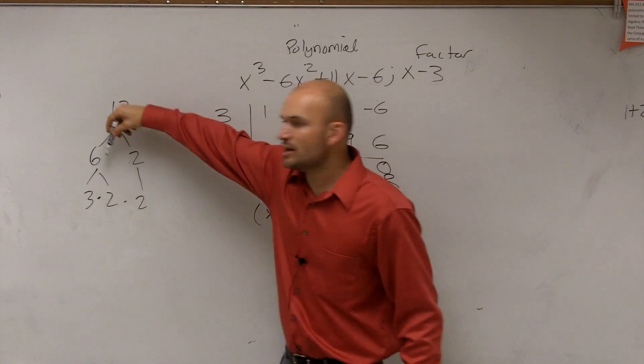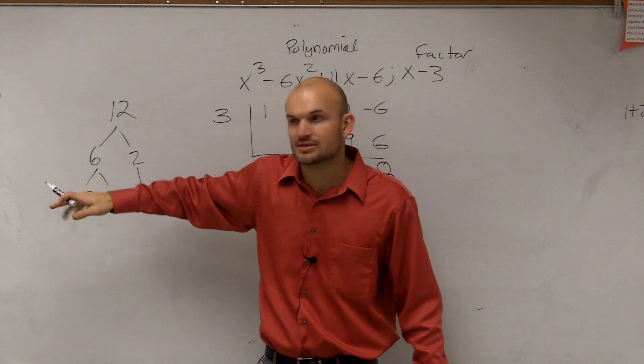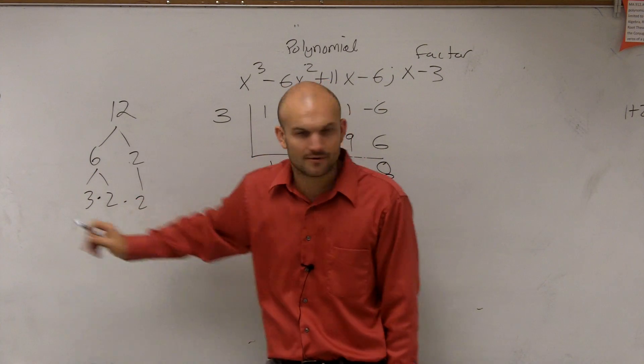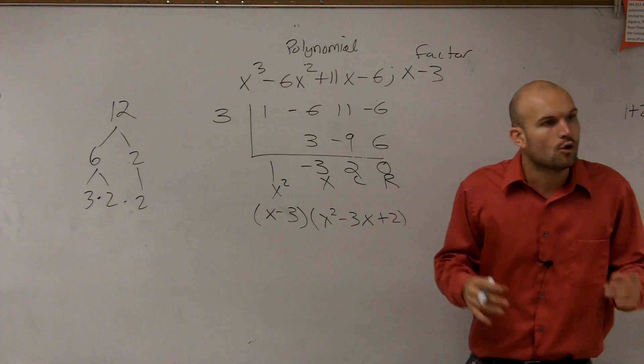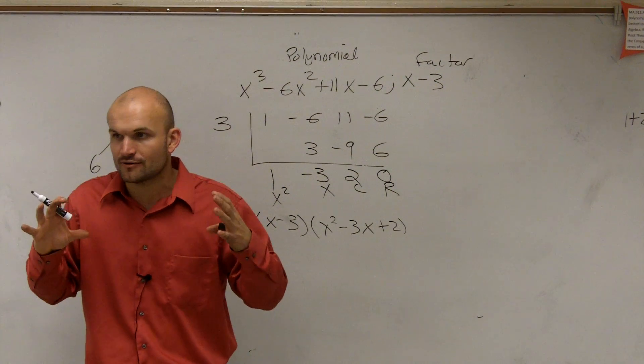But with numbers, we don't want just to say the factors, we want to find the prime numbers. So we factor 6 again. We factor it further down. And when we're talking about polynomials, we only want our factors as linear factors.